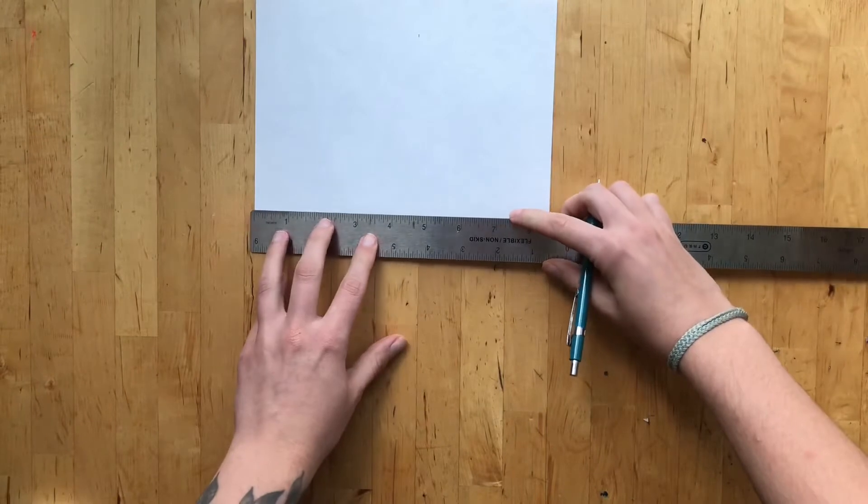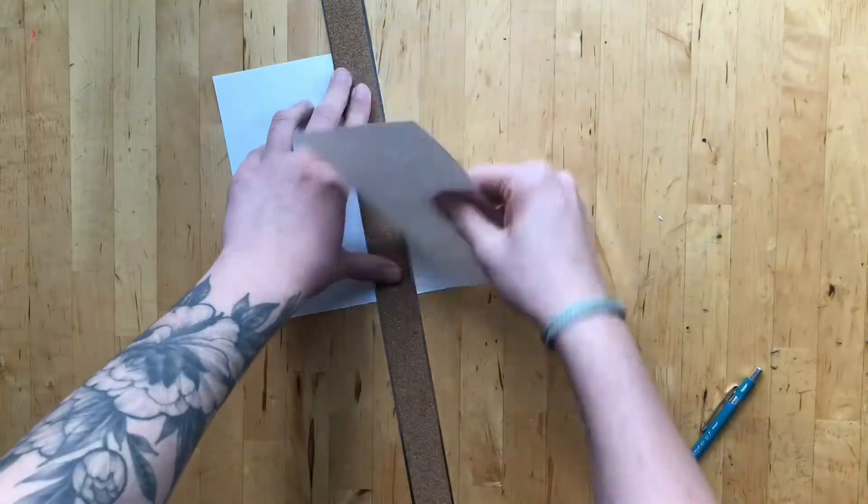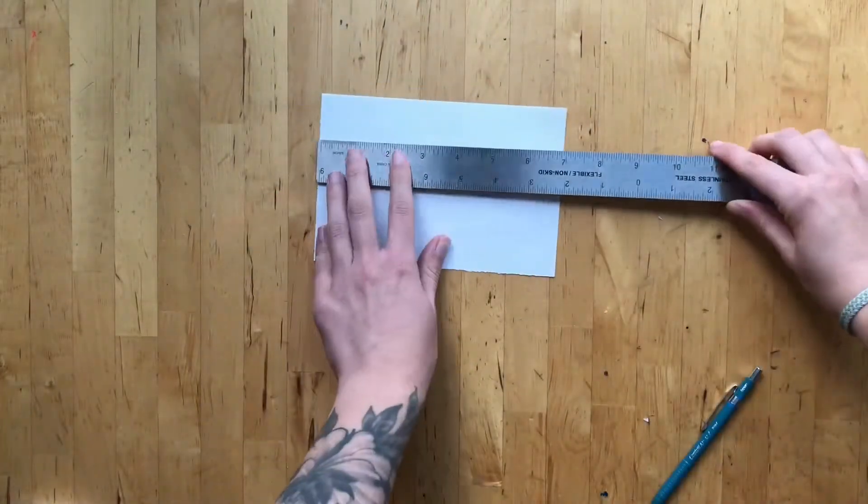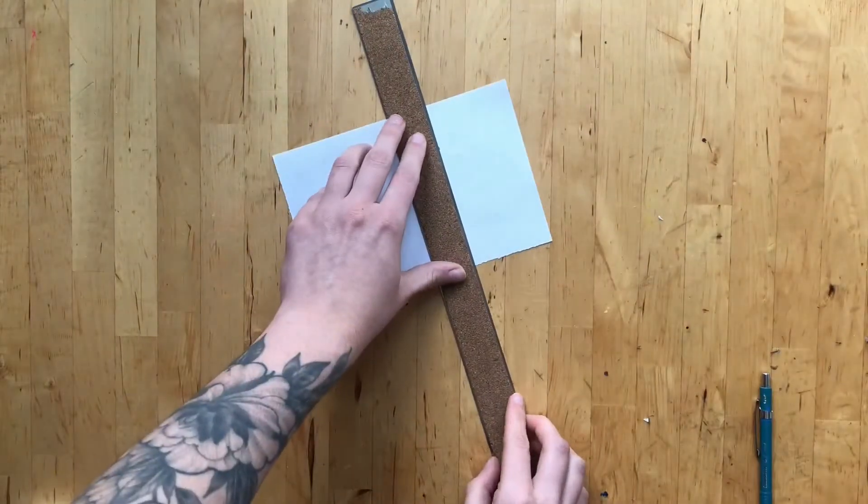Transfer these measurements to the paper you are using for the pages using a ruler and pencil. After measuring your pages, use a scissor or ruler as a straight edge to trim them. Repeat this process for the rest of your pages.